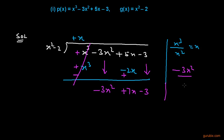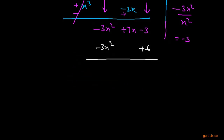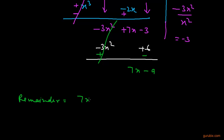Dividing minus 3x squared by x squared gives us minus 3, so the next term in the quotient is minus 3. Multiplying minus 3 with x squared minus 2 gives us minus 3x squared plus 6. We change the sign of these terms, so they cancel out, and we are left with 7x minus 9. This is the remainder: 7x minus 9.